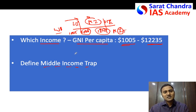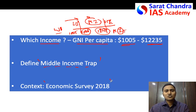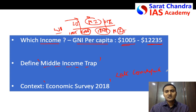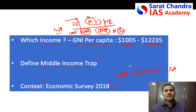In UPSC mains, it is better to write the context in your introduction. For example, the term 'middle income trap' actually appeared in the Economic Survey 2018. You can mention one or two lines: the Economic Survey 2018 mentioned the 'late convergence stall' that India is facing, because of which there is a chance of a middle income trap. Generally in economy answers, mentioning budget statements, economic survey references, or government reports will fetch more marks.